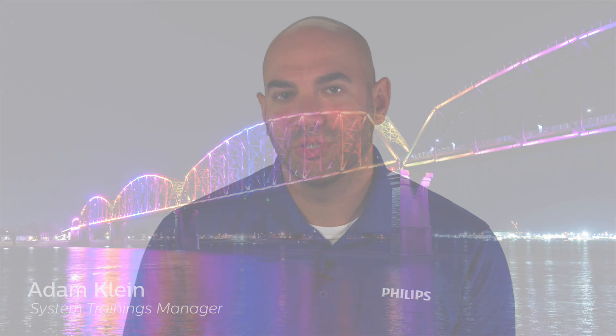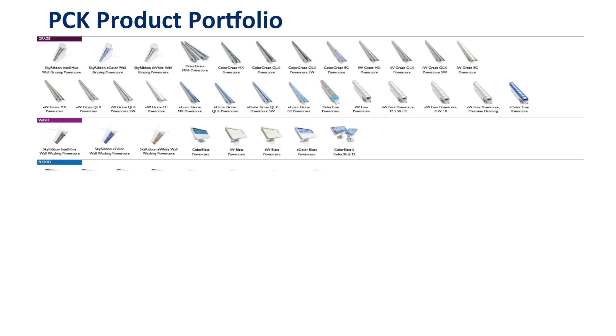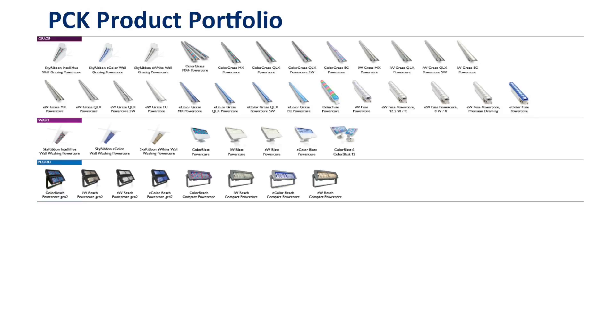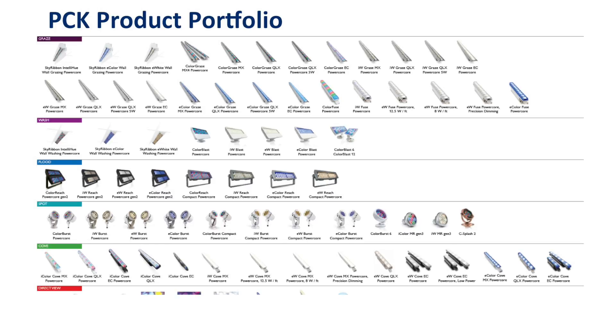The Philips Color Kinetics product portfolio can be divided a number of ways: by application, by light type, by performance level, and by color temperature. This table shows the portfolio by applications. There's grazing, wash lighting, flood lighting, spotlighting, cove lighting, and direct view.